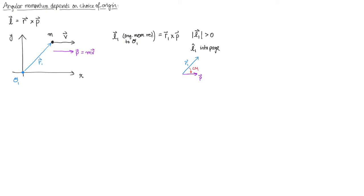But what if we chose a different origin? What if we chose our origin to be somewhere on that y-axis, or anywhere that is in line with the velocity vector? In that case, we have L2, which is the angular momentum relative to origin number 2. That would be r2 cross p, where r2 is a position vector from our second origin out to our particle. Now we have r2 and p, and they are parallel.